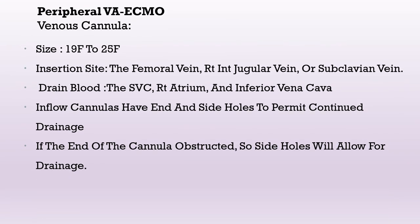The first part of ECMO is the drainage cannula, which is the venous cannula in VA ECMO. Its size ranges from 19 to 25 French. The insertion site can be the femoral vein, right internal jugular vein, or subclavian vein. The drainage pool will be from the superior vena cava, right atrium, and inferior vena cava. The drainage cannula has end and side holes — if the end is obstructed, the side hole will allow for continued drainage.